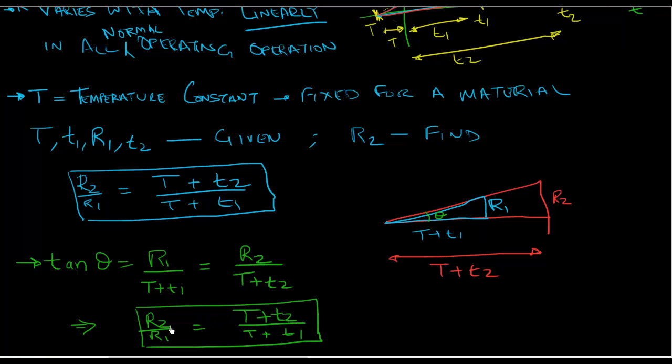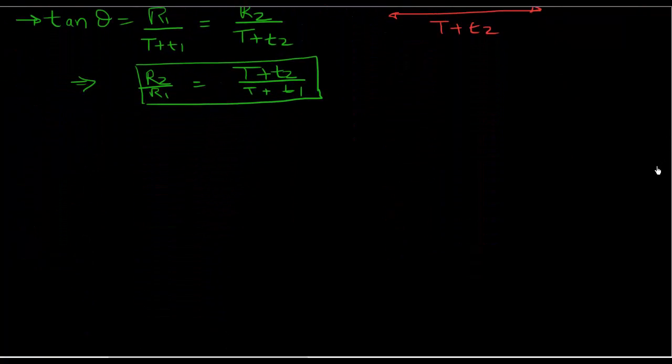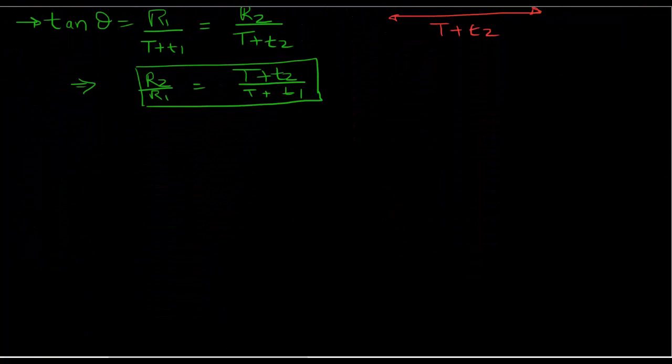Again, you're given all the values except R2 here. So it should not be very difficult for you to find out what R2 is. Let's do a quick example to use this formula. And that will clarify this even more.